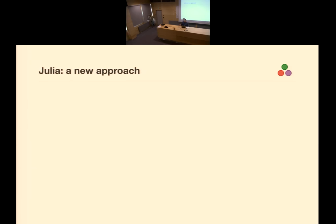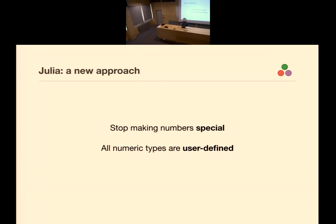In Julia, we took a new approach. When we started designing the language, we asked ourselves: what does it take to make numbers not special? What does it take to remove those nine pages from the Scheme spec? All numeric types are going to be user-defined. Some will be defined for you — it would be inconvenient to start up a prompt and not know what integers are — but they are defined in Julia code, and how they behave is defined in Julia code.